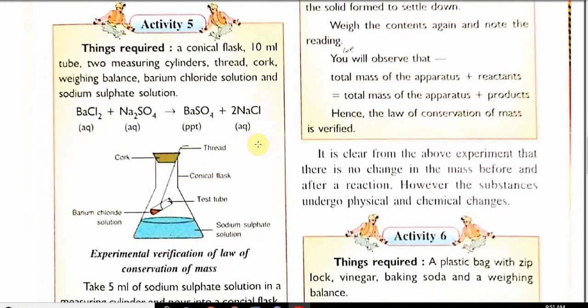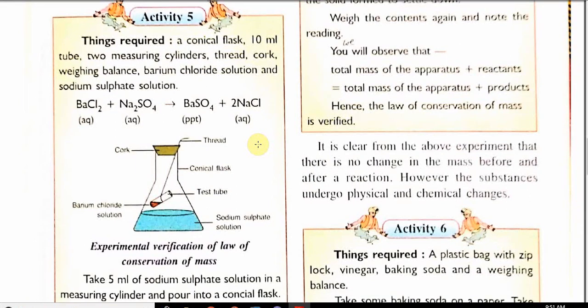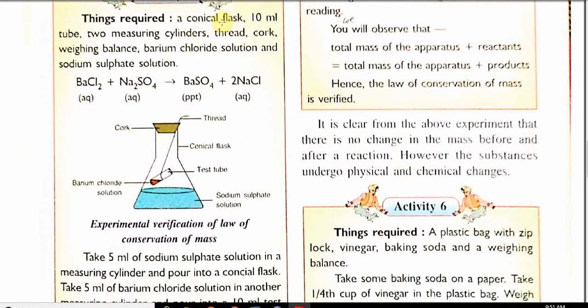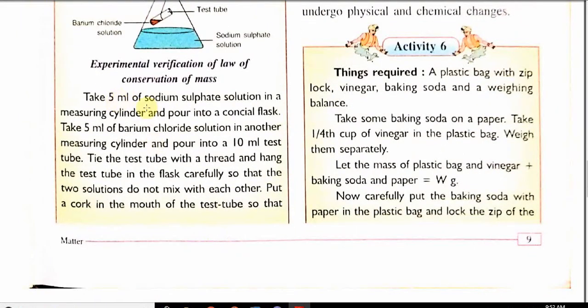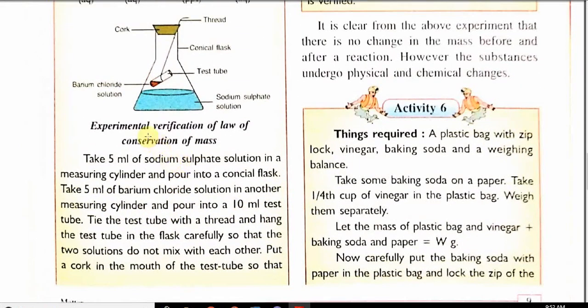If you take an example of activity 5, you can see on left hand side of your screen. Things required are conical flask, 10 ml tube, two measuring cylinders, thread, cork, the balance for measuring the mass, barium chloride that is BaCl2 and sodium sulfate solution that is Na2SO4. Experimental verification of law of conservation of mass. Take 5 ml of sodium sulfate solution in measuring cylinder and pour in a conical flask. Take 5 ml of barium chloride solution in another measuring cylinder and pour it into a test tube. Tie the test tube with a thread and hang it in the beaker.